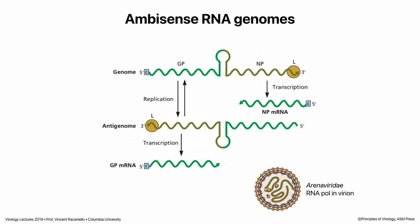The last genome type is not part of the seven classes but is interesting: ambi-sense RNA, found in arena viruses like Lassa virus. These have segmented genomes where part of the RNA is positive-stranded and part is negative-stranded. When this RNA enters the cell, it is not translated. The virus particles have an RNA polymerase within them, which first copies that RNA into messenger RNA that is then translated. That's why we classify them as minus-stranded viruses — all those viruses need to package an RNA polymerase.